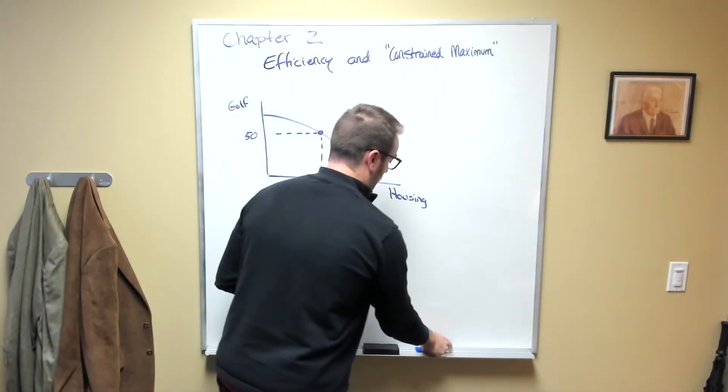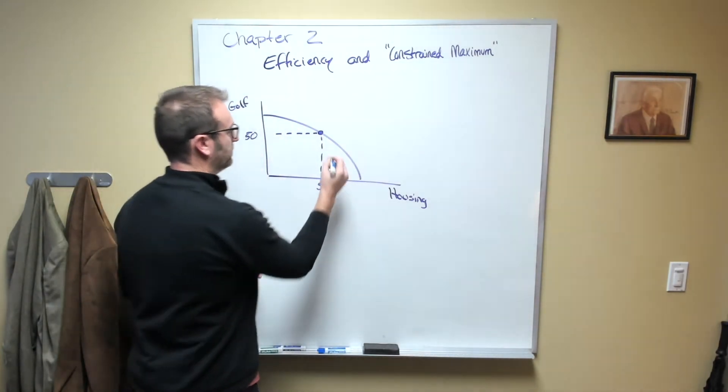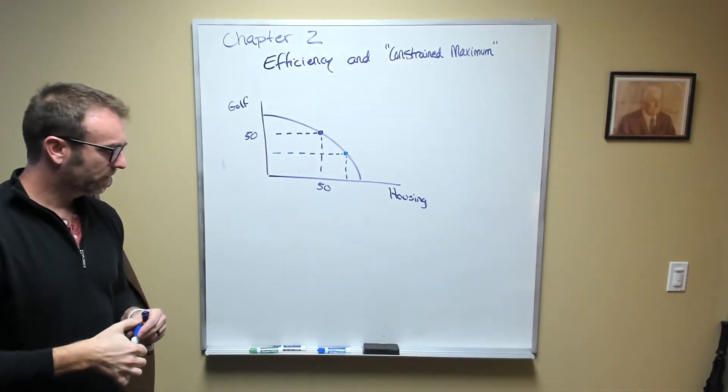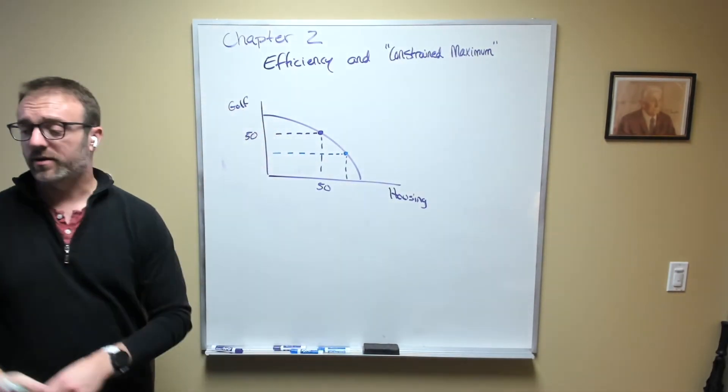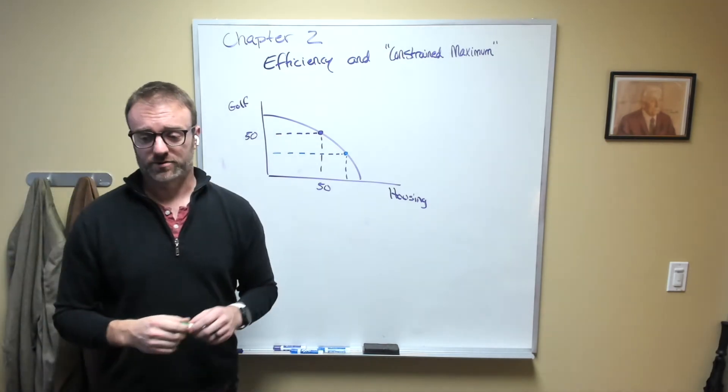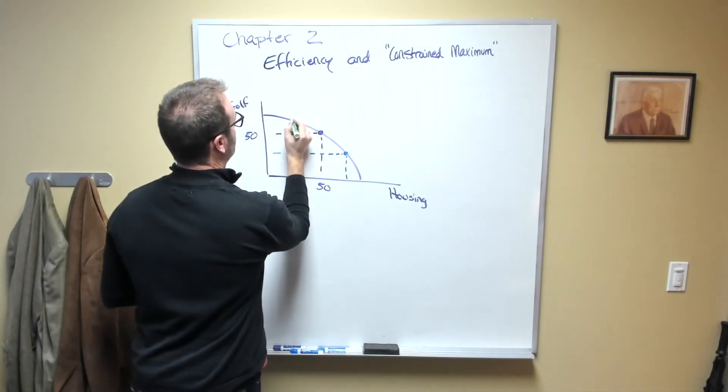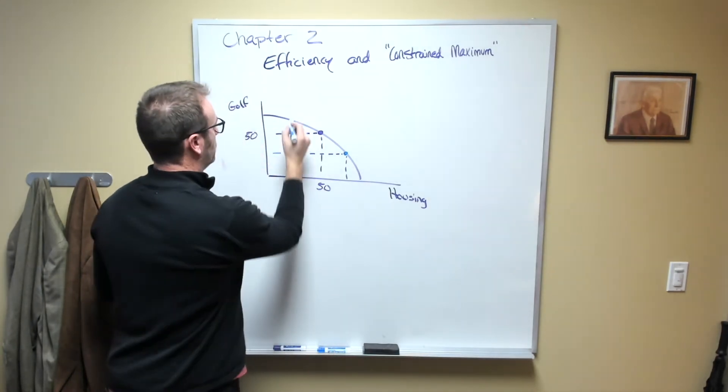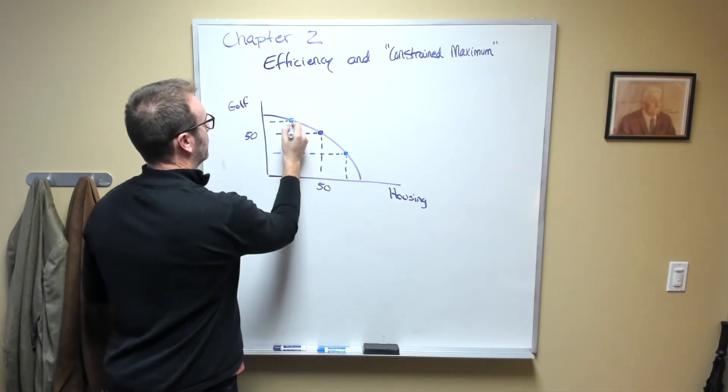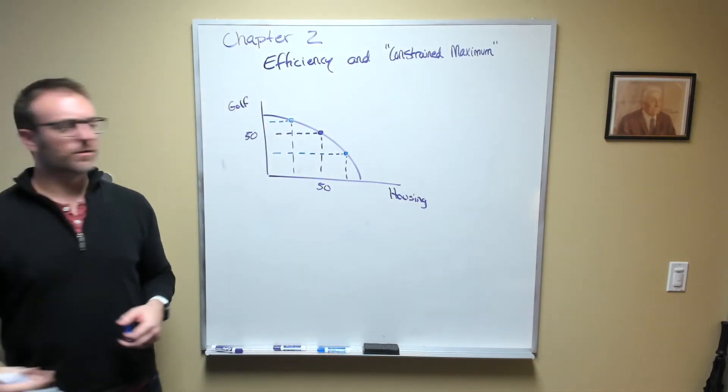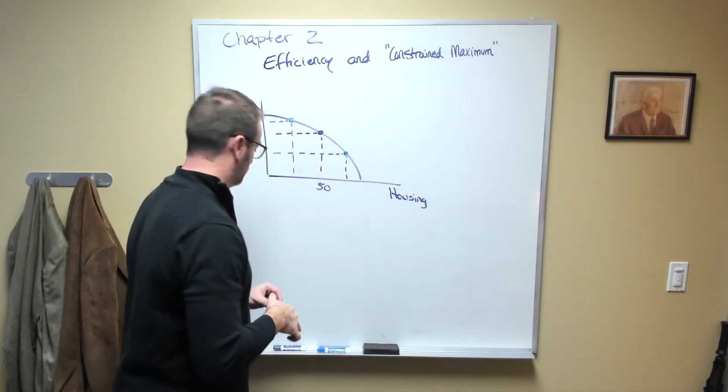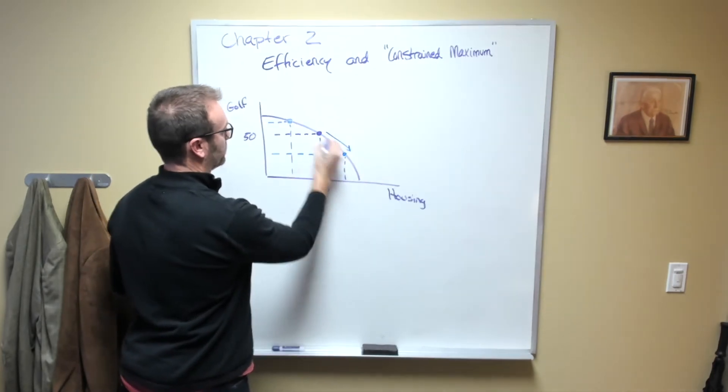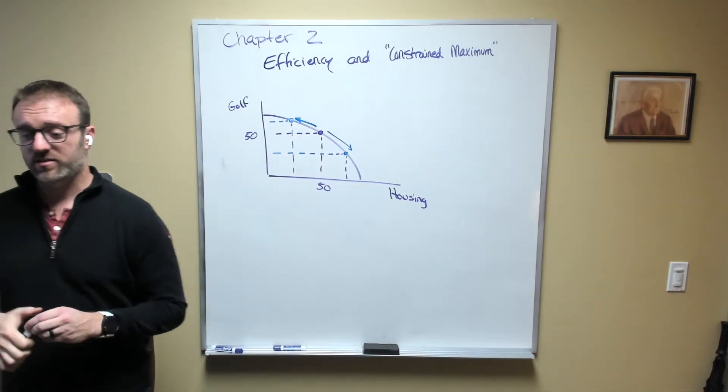You might say that's too much golf, we need more housing. So in your opinion, it would be more efficient to be maybe here. But in my opinion, I might say no, we have far too much housing and not enough golf courses, so I would say that we need to move to here. How do we decide who is right? How do we decide which one of us gets to actually make that decision about whether we move this way or this way? That's a really important question and somehow we have to figure out a way to answer that question.